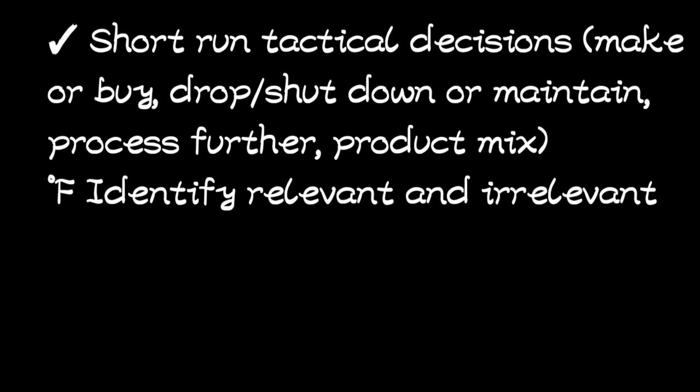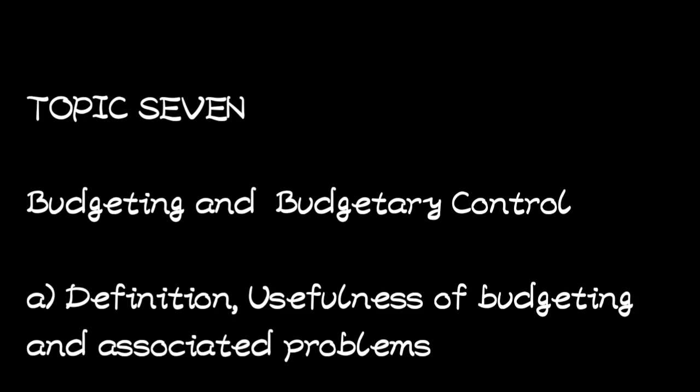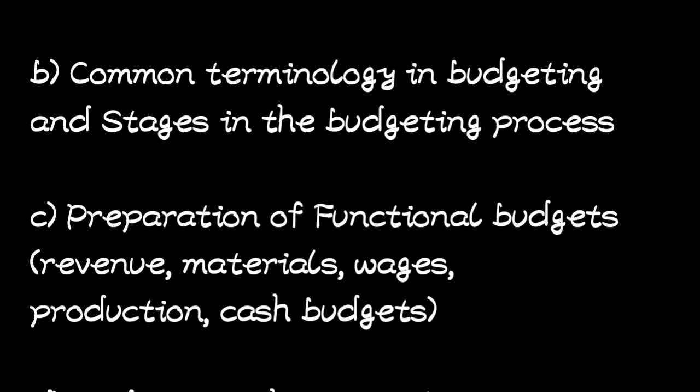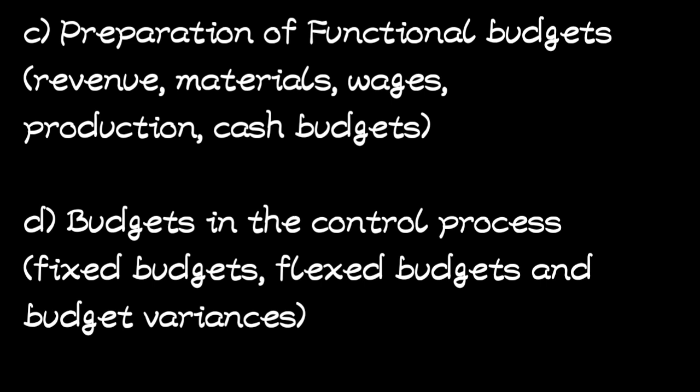Topic seven is called Budgeting and Budgetary Control. Under this we shall look at the definition and the usefulness of budgeting and its associated problems. We shall also look at the common terminologies in budgeting and the stages in the budgeting process. We shall look at the preparation of financial budgets — the revenue budgets, material budgets, wages budgets, production budgets, cash budgets and very many others. Lastly in topic seven, we shall look at budgets in the control process: fixed budgets, flexed budgets, and budget variances.